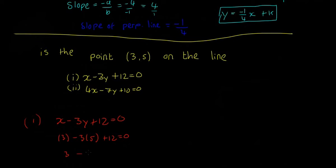This simplifies to 3 - 15 + 12 = 0, which gives us 0 = 0. This checks out, so the point is on the line.